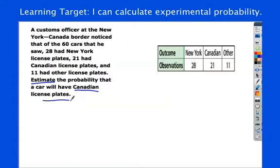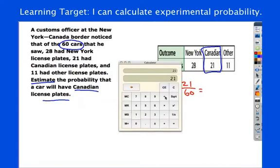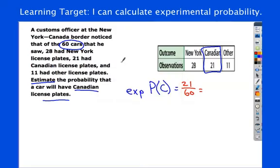All right, so first thing here, get our notation, experimental, probability of C for Canada. It tells me there are 60 cars, and looking at my table, 21 were Canadian. So, my ratio is 21 to 60, which I'm then going to convert to a decimal. So, 21 divided by 60 equals 0.35, or 35%. So, again, 35% of the cars in the past were Canadian. I expect in the future that 35% will be Canadian as well. Again, it's not necessarily always going to hold true, but for the data we observed, this is what we get.